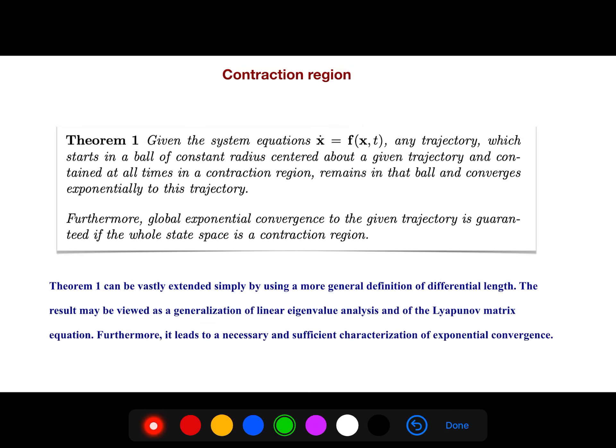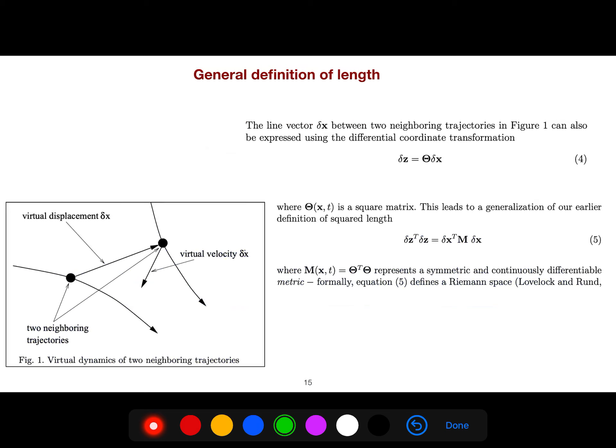This theorem that I explained in previous slide, this theorem can be vastly extended simply by using a more general definition of a differential length. The result may be viewed as a generalization of linear eigenvalue analysis of the Lyapunov matrix equation. And it leads to necessary and sufficient condition of exponential convergence. Instead of just saying theta is something, there is no theta, there is another coordinate transformation, which is much more general, because it depends on x and t. And this displacement is now transformed, depending on if you're familiar with Riemannian geometry.